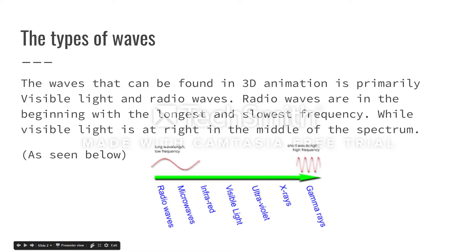The waves that can be found in 3D animation are primarily visible light and radio waves. Radio waves are at the beginning, with the longest and slowest frequency, while visible light is right in the middle of the spectrum, as seen below.